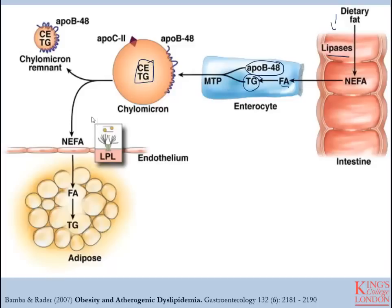The chylomicrons then interact with other tissues. In particular, lipoprotein lipase will break down these fats, allowing free fatty acids to be taken up by adipocytes and stored as triglyceride within these cells. The chylomicron remnant then travels to the liver where it is removed from circulation.